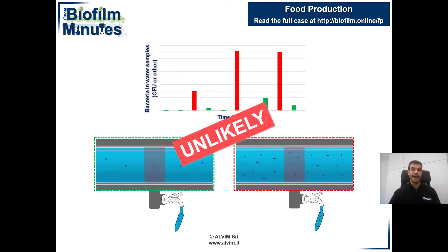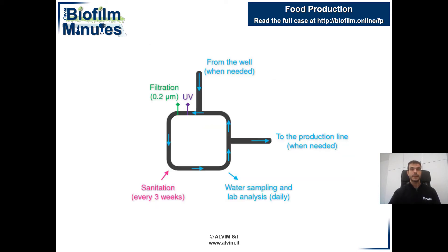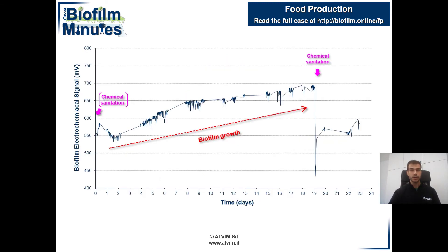But this is highly unlikely. In order to check what was really happening in this system, the customer decided to install an Alvin sensor. Thanks to the indication furnished by the Alvin probe, it was possible to observe that immediately after the chemical sanitation of the system, biofilm started to grow, as indicated by the increase in Alvin signal, highlighted in red.